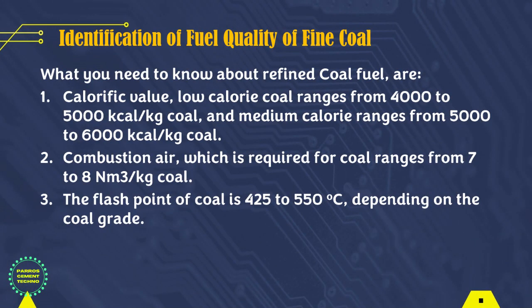For fine coal fuel quality: the calorific value of coal — low calorie ranges from 4,000 to 5,000 kilocalories per kilogram of coal, and medium calorie ranges from 5,000 to 6,000 kilocalories per kilogram of coal. This is important to know, especially when mixing fuel between oil and coal, or changing fuel from oil to coal for the combustion process in the kiln system. Combustion air required for pulverized coal ranges from 7 to 8 normal meter cubic per kilogram of coal, adjusted to fuel consumption. The flash point for coal is from 425 to 550 degrees Celsius, depending on the coal grade.